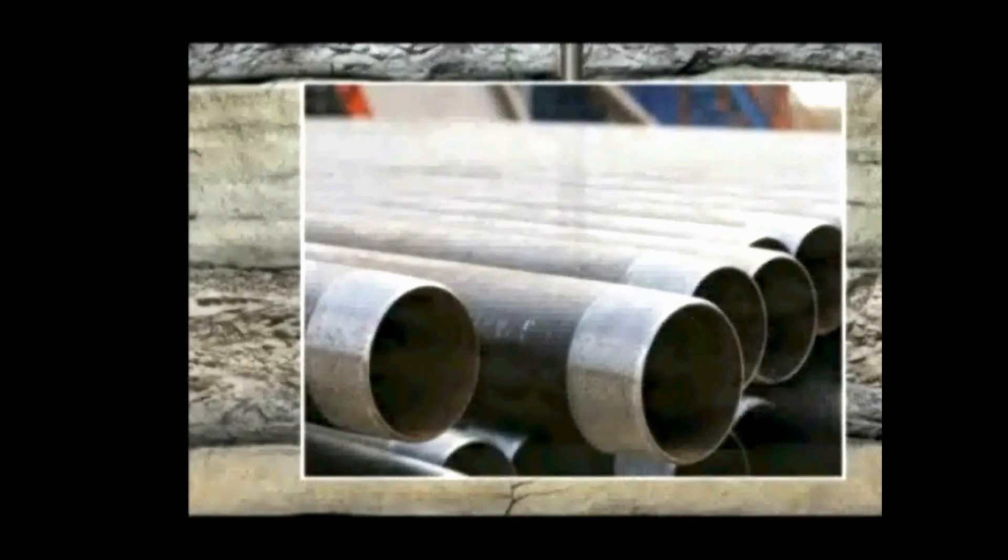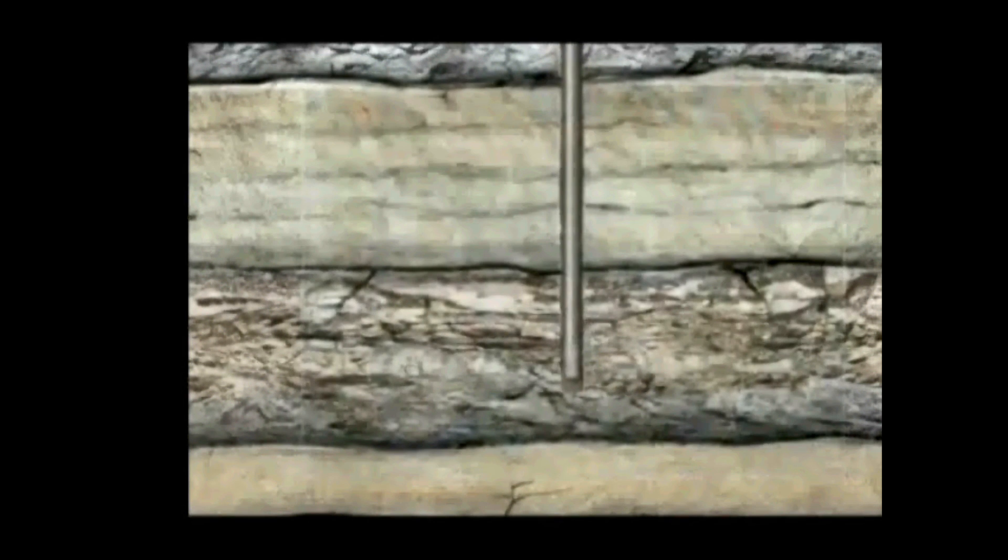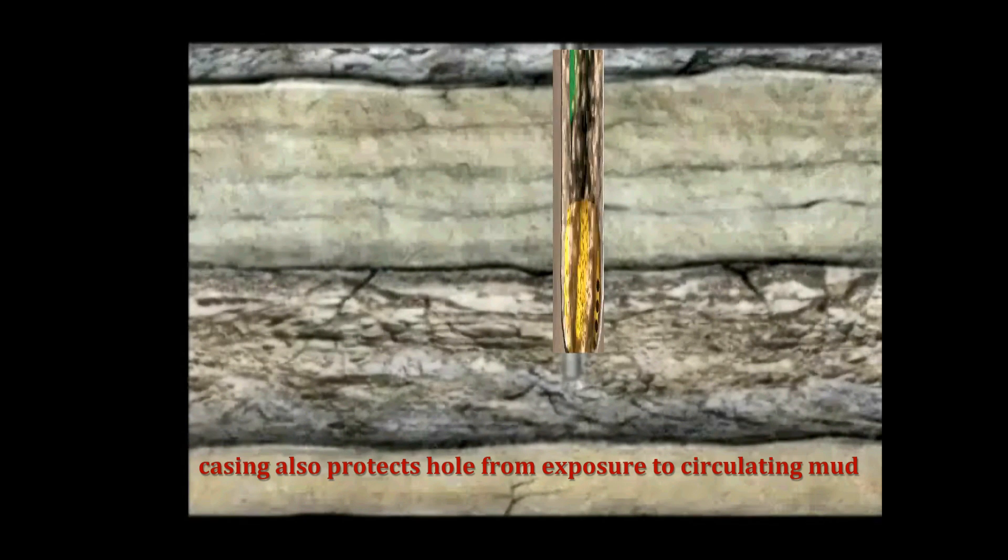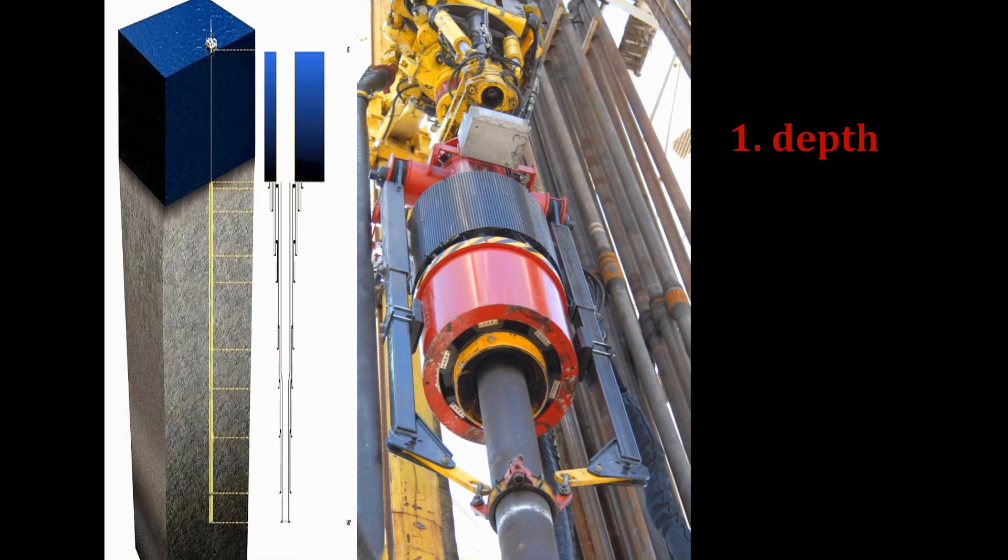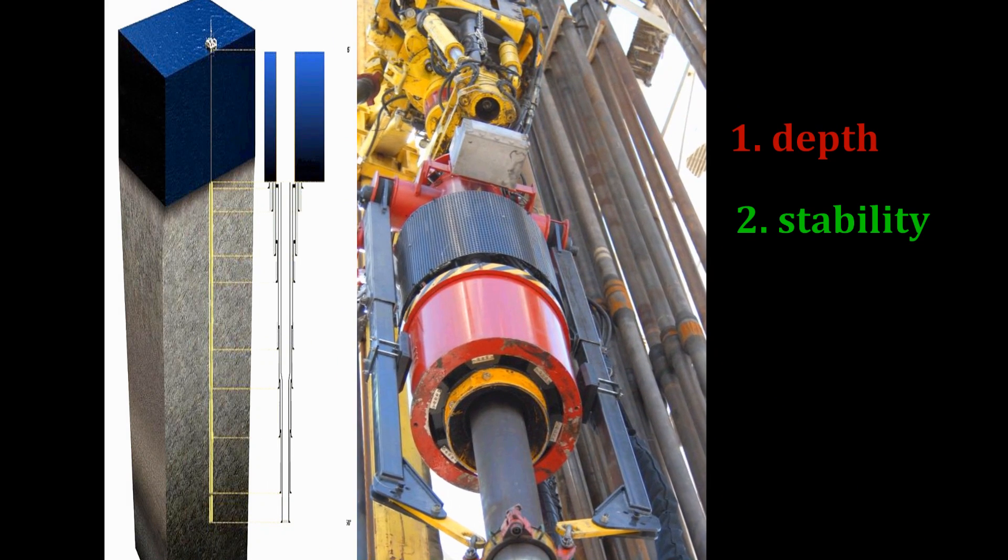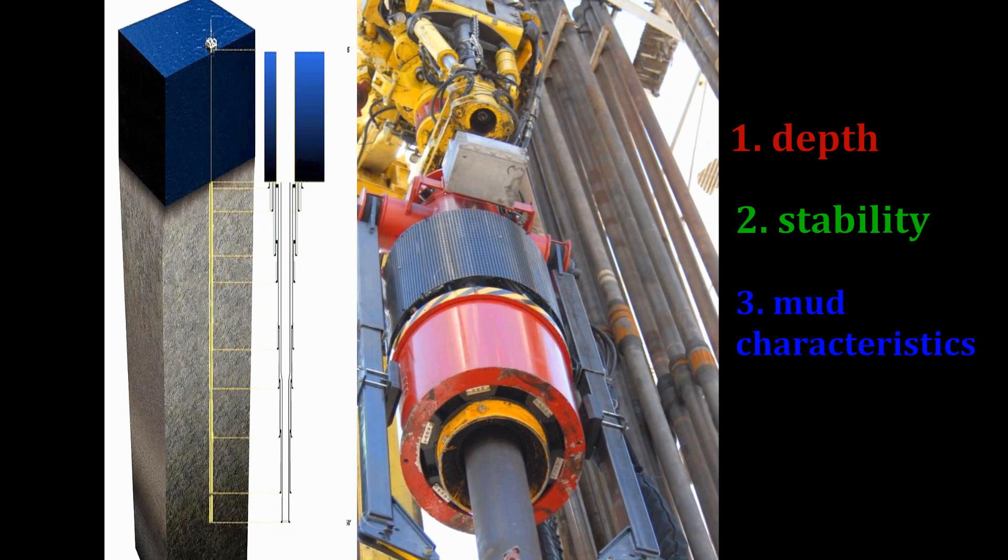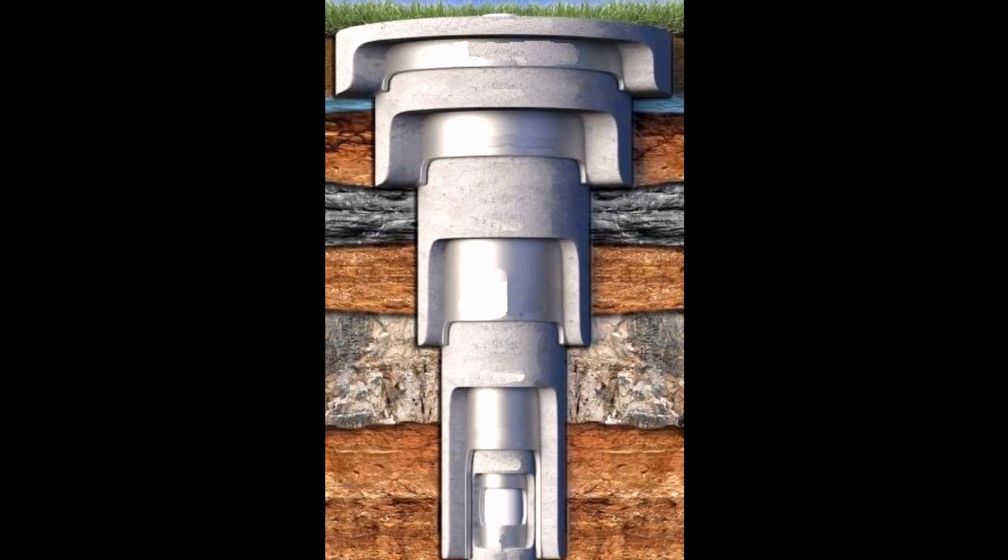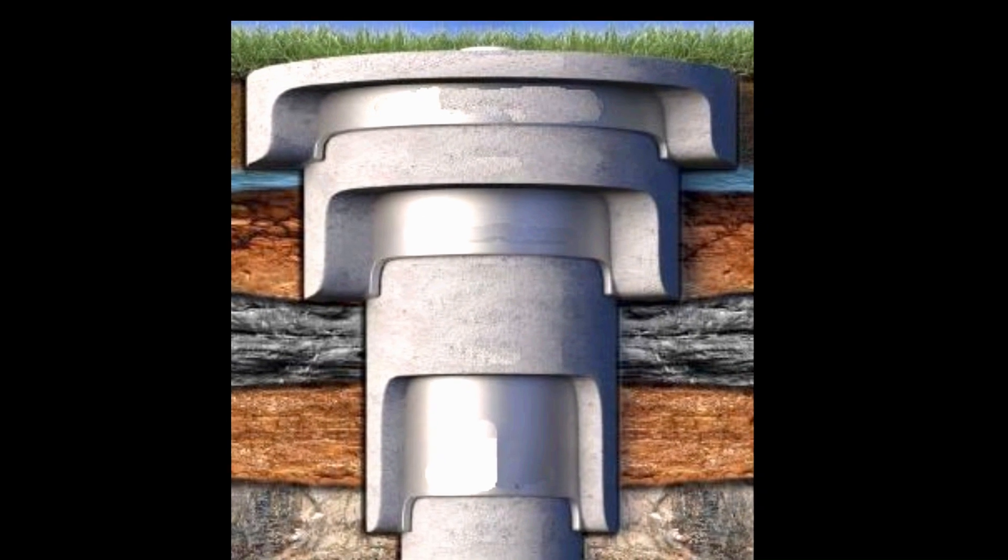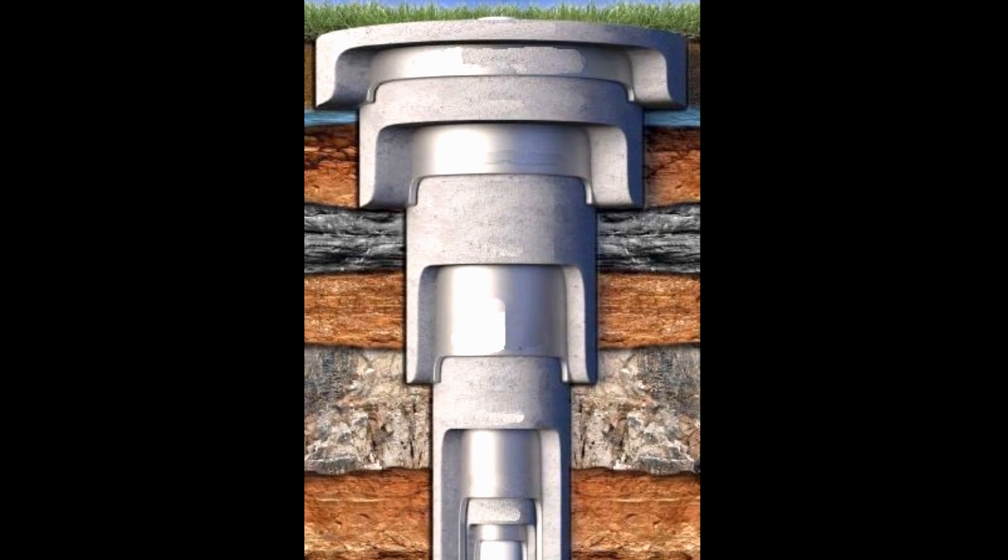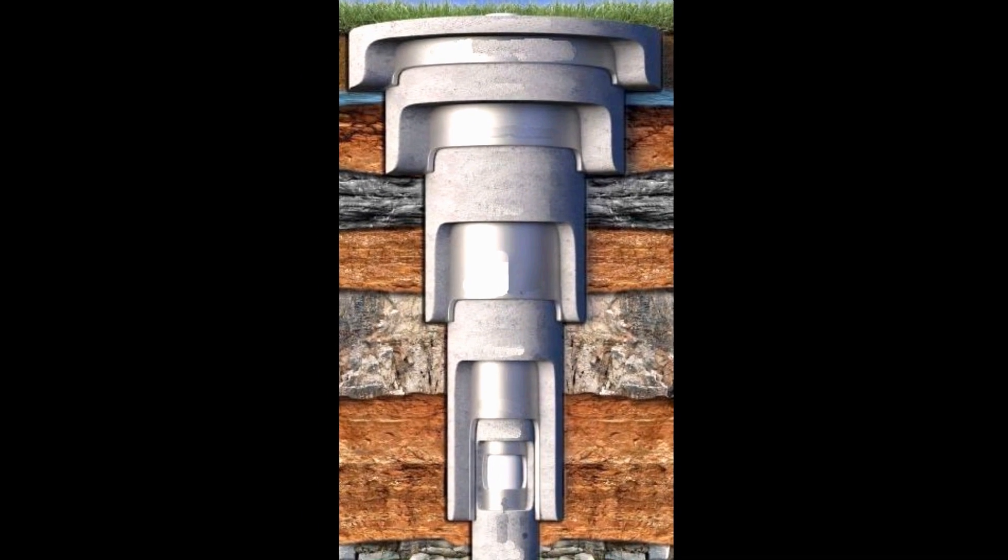Casing strings are run and cemented into place as the well is drilled deeper to protect the hole from further exposure to the circulating mud. The exact number of strings depends on the depth of the well, the relative stability of the formations being penetrated, and the characteristics of the drilling mud. As I mentioned earlier, as each casing string is run, it is run inside the previous string that was slightly larger. Conversely, the diameter of each new string will be smaller than the one it fits into as the casing is run deeper.